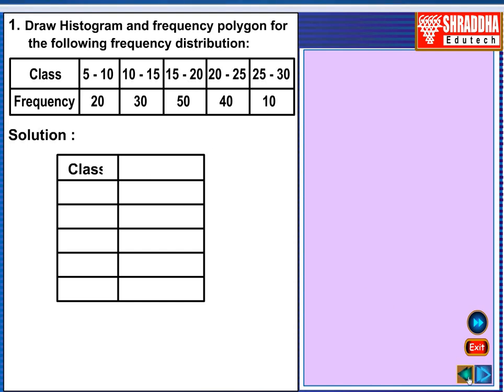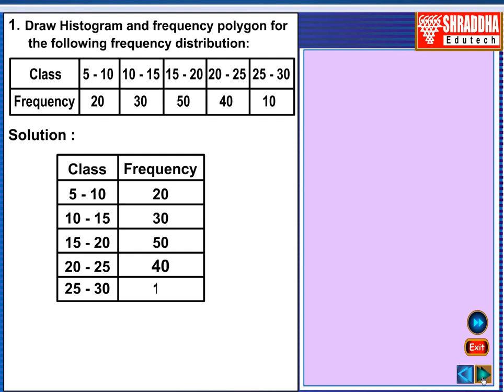Solution. Class, Frequency, you write the class 5 to 10, 10 to 15, 15 to 20, 20 to 25, 25 to 30. Given the frequency 20, 30, 50, 40, 10. You get the table.